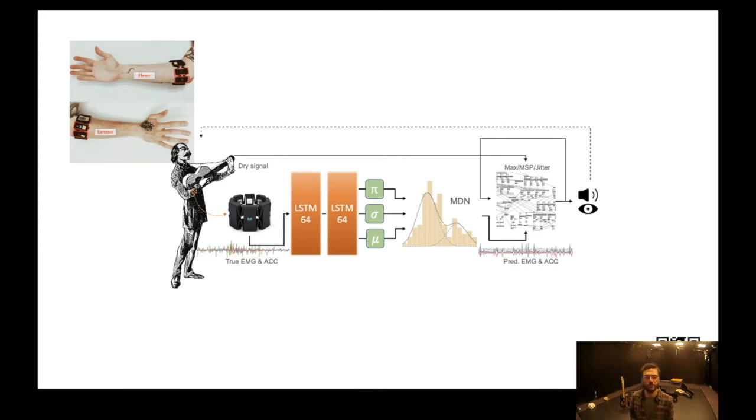The model uses two long short-term memory layers with 64 hidden units combined with a mixture density network, which transforms the output of the network into mean, weight and standard deviation of a Gaussian mixture model. These parameters are then sampled to generate real value predictions. In the generation phase, the performer can dynamically adjust the model's level of randomness by tweaking its parameters such as weight and distribution temperatures.